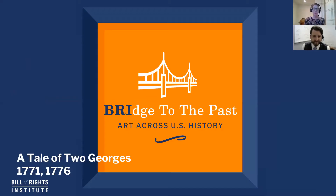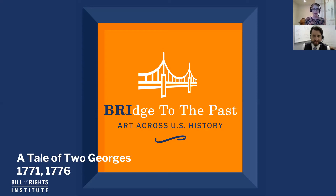Without further ado, we are pleased to present you with a tale of two Georges. We are looking at two portraits of two men, both named George from the 1700s. If you've seen us in past Bridge to the Past episodes, you'll know that we are right in the lead-up to the American Revolution. We're going to start with George number one — King George III by the artist Johann Zoffany, painted in 1771.